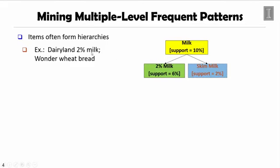If you see this Dairyland 2% milk actually sitting in a hierarchy, the top level could be milk, then go down to 2% milk, then go down to Dairyland 2% milk. So it is interesting to mine multi-level association rule patterns. Then the interesting thing becomes how to set up minimum support threshold.